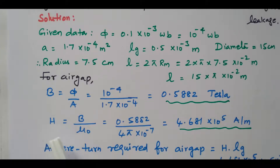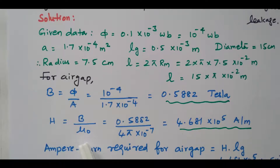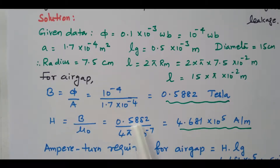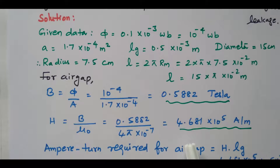Now we will find the magnetic field intensity H for the air gap. H equals B divided by μ₀ (since B = μ₀μᵣH, and for the air gap μᵣ = 1). So H equals 0.5882 divided by μ₀, where μ₀ = 4π × 10⁻⁷. After simplifying we get H = 4.681 × 10⁵ ampere per meter. The magnetic field intensity is now calculated.